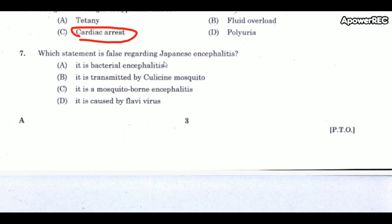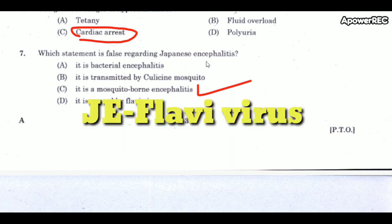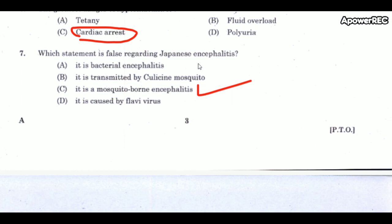Next question: which statement is false regarding Japanese encephalitis? The correct answer is that it is a mosquito-borne encephalitis — this statement is false. Japanese encephalitis is a flavivirus transmitted by Culex mosquitoes. In clinical cases, life-threatening encephalitis occurs.